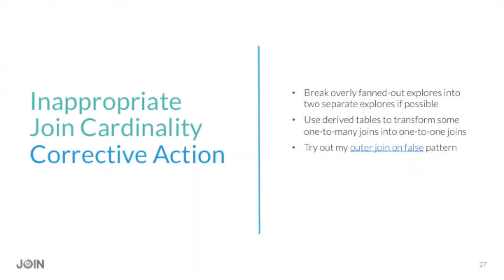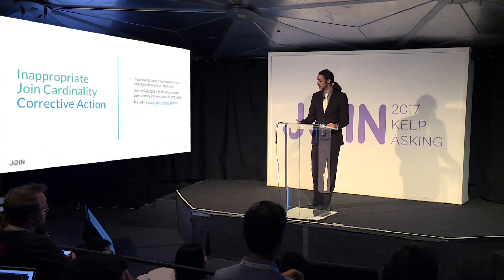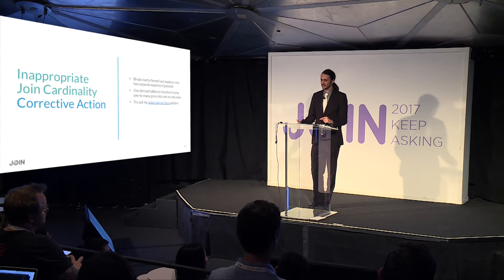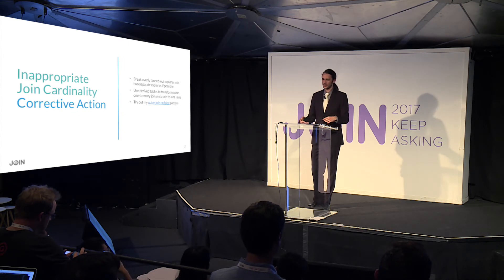Corrective actions include breaking overly fanned-out explorers into separate explorers where possible. If you want to keep different tables in the same explore, you can use a derived table to make it a one-to-one join instead of one-to-many by grouping before you join. There's also a pattern documented on Looker's Discourse forum for another creative approach. Now that merged results have been announced, you can also avoid this on the front end by using merged results to bring together two related data sets.